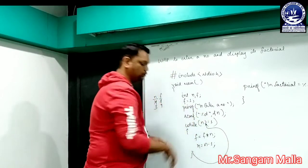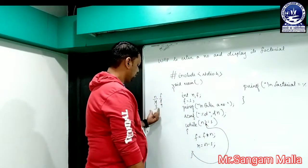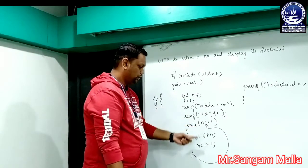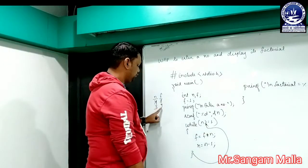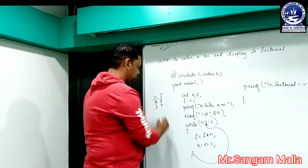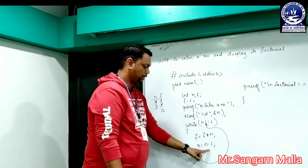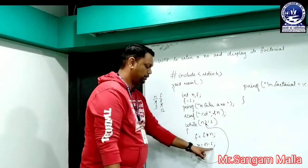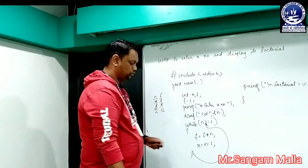It will be redirected to the condition. n >= 1: n is now 3, and 3 > 1, true — it enters the block. f = f * n means 4 * 3 = 12, so 12 is stored in f. Then n = n - 1: n value is 3, so 3 - 1 = 2, and n is updated to 2.